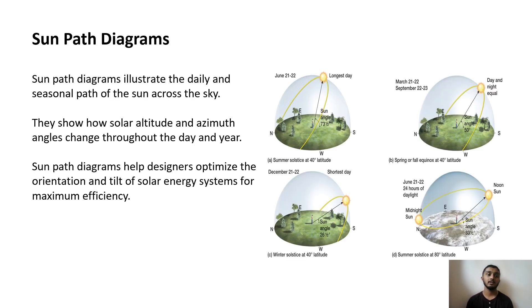Sun path diagrams illustrate the daily and seasonal path of the sun across the sky. They show how the solar altitude and azimuth angles change throughout the day and year. Sun path diagrams help designers optimize the orientation and tilt of solar energy systems for maximum efficiency. Here you can see the sun path diagrams.